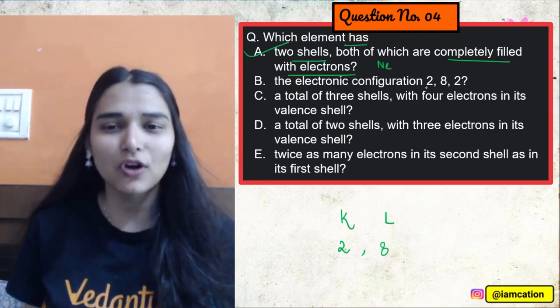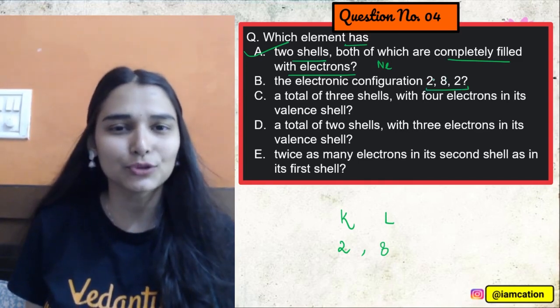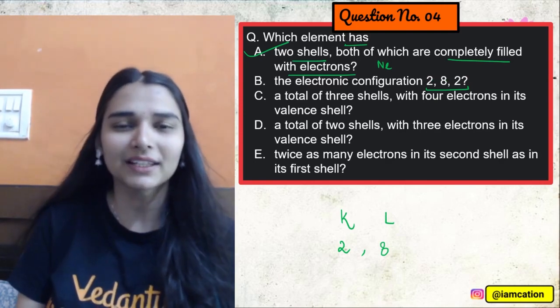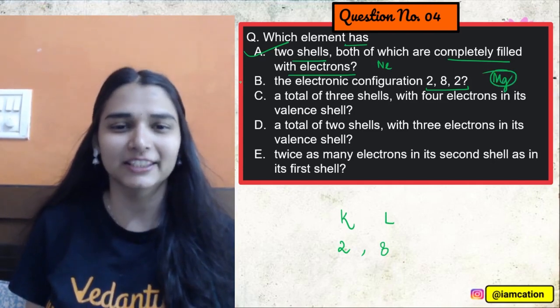The electronic configuration of 2, 8, 2. You can see atomic number 8 plus 2, 10 plus 2, 12. 12 electrons. 12 atomic number. This is magnesium. We know magnesium.